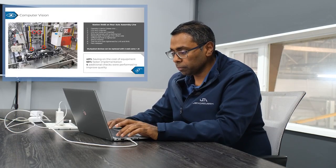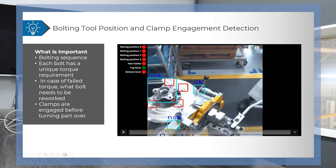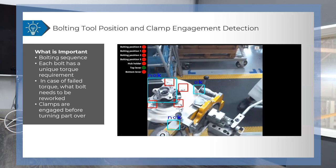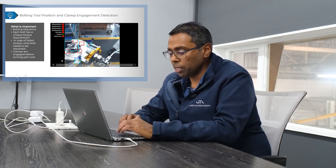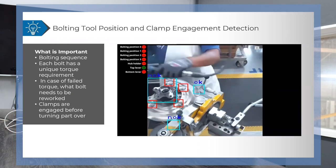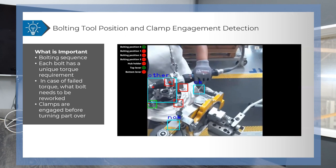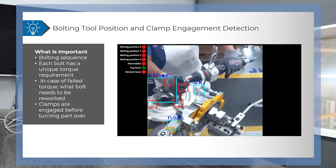Let's dive into computer vision. The first example is an axle assembly line where what's critical is that we tighten all four dust cover bolts in the right sequence. Using computer vision, we've created a machine learning model of the bolting tool the operator uses. The operator brings in the bolting tool — you'll see the red dots which are key points we've determined — and if the operator puts the bolting tool in the wrong position we switch off the bolting tool so they're not able to make a mistake.